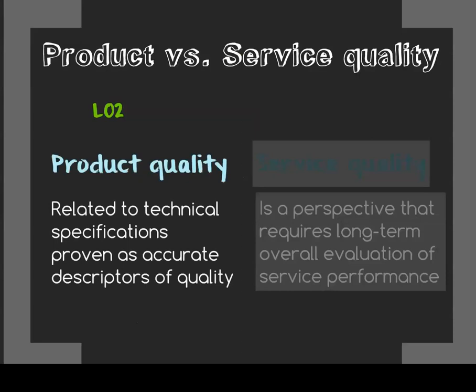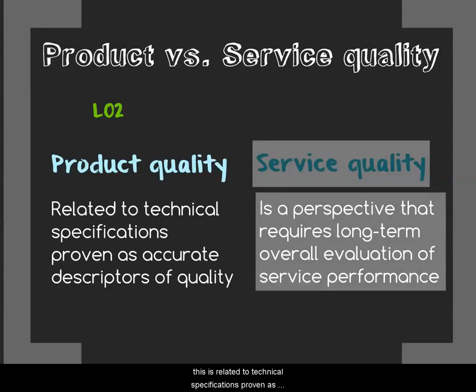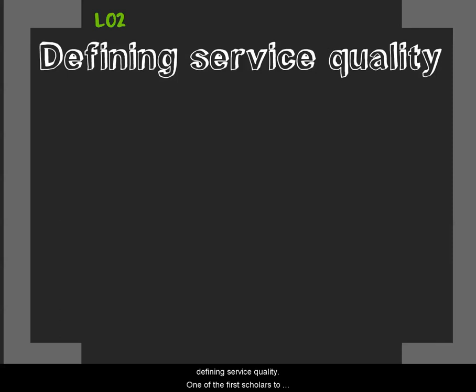To sum up product versus service quality: product quality is related to technical specifications proven as accurate descriptors of quality, whereas service quality is a perspective that requires long-term overall evaluation of service performance. The last part of Learning Outcome 2 deals with defining service quality.